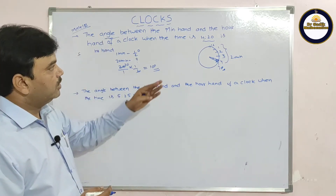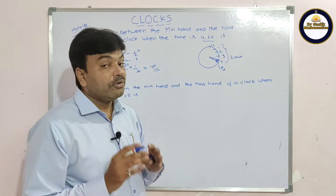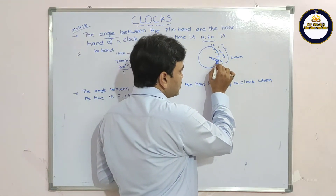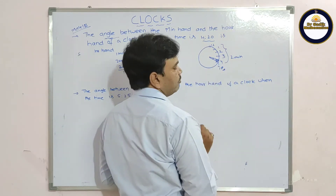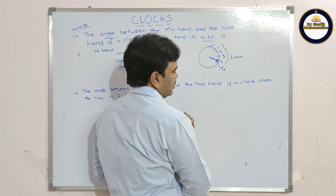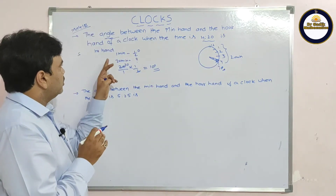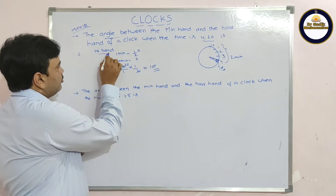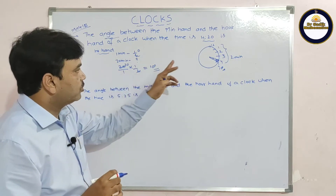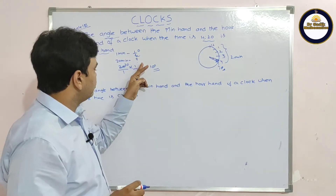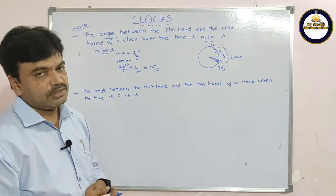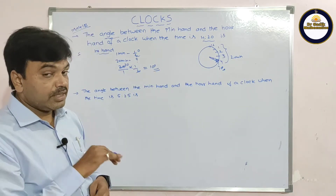Once again — at time 4:20, the minute hand is at 4, but the hour hand has moved slightly beyond 4. We want to find this angle. The hour hand in one minute makes half a degree, so for 20 minutes: 20 × (1/2) = 10 degrees. The angle between the hands is 10 degrees. Let us see another problem.